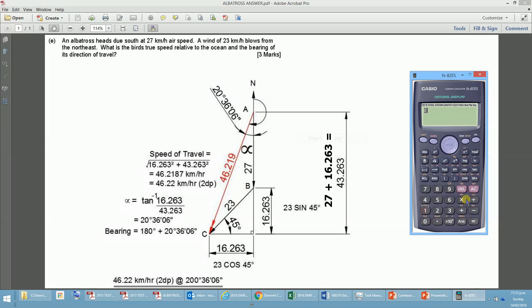And then that brings us to working out the distance here, which is 16.263 squared plus 43.263 squared equals, and then we want to take the square root of that, so square root of the answer equals, and that's 46.219 and 46.22, just to two decimal places.